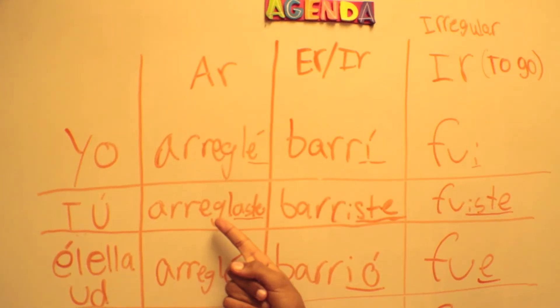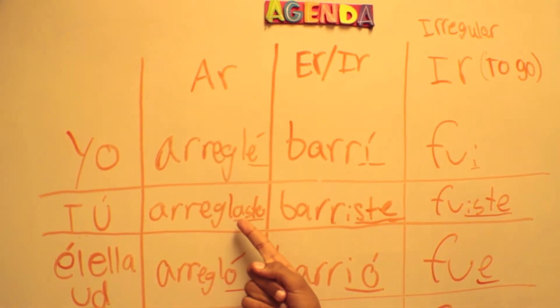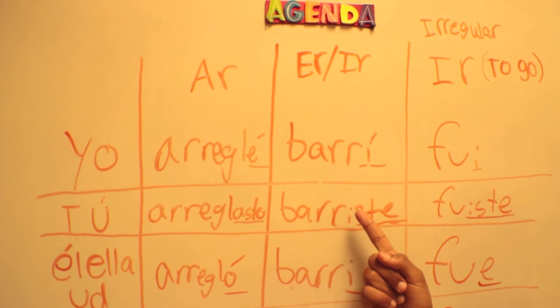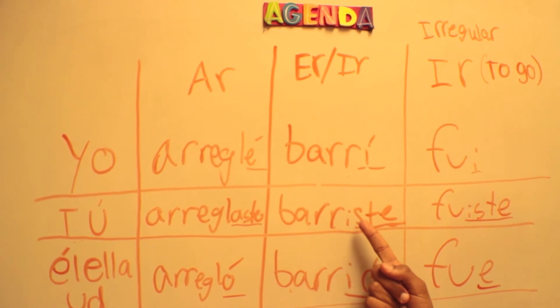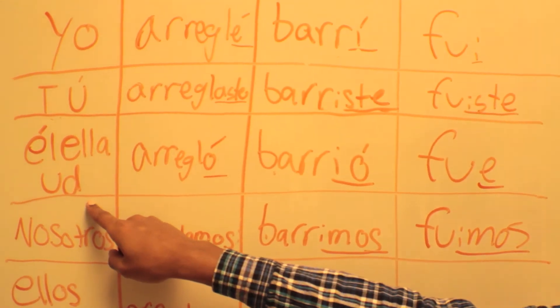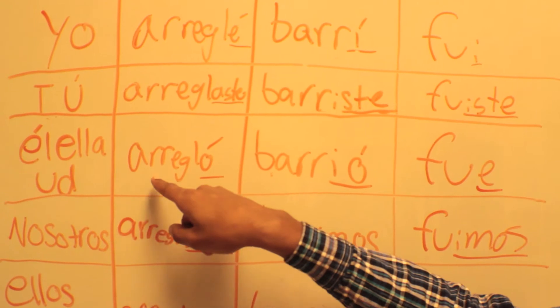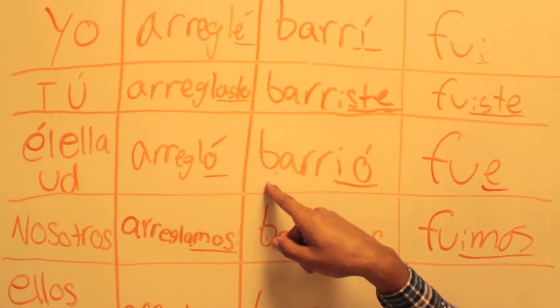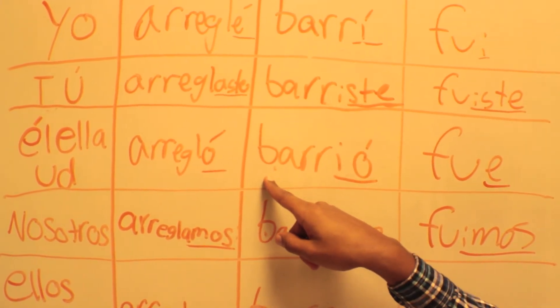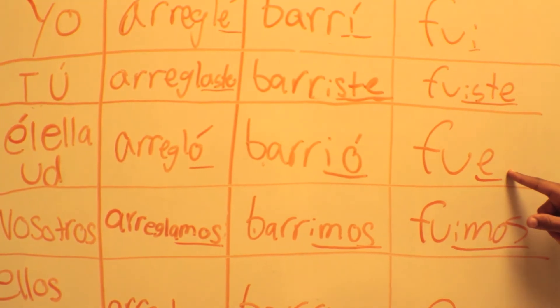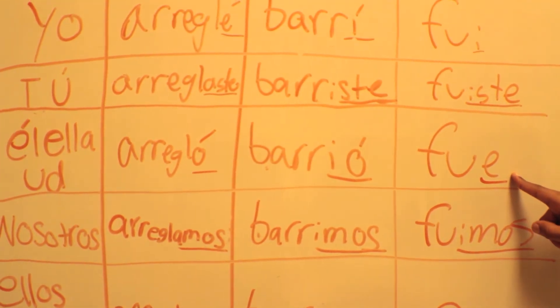For the tú form, AR verbs end with ASTE. For ER and IR endings, they end in ISTE. For usted, the AR and IR endings both end with O with an accent mark. For irregulars, they end with E, no accent mark.